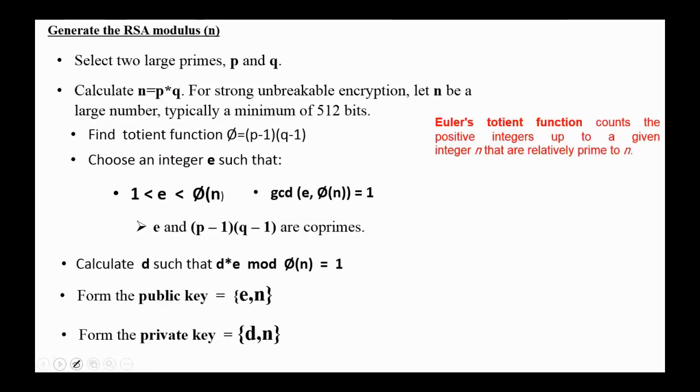Here are the steps for generating the public and private keys. First, we select two large prime numbers, p and q. Next, we calculate n, p multiplied by q. For strong and unbreakable encryption, let n be a large number, usually a minimum of 512 bits, and in modern systems even 1024 bits and more.